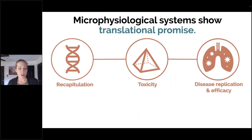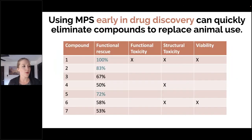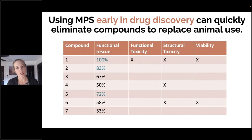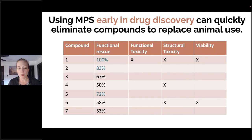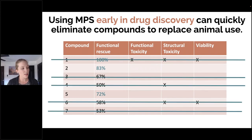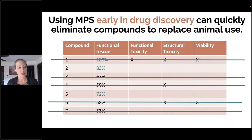MPS do really show translational promise. One way they're already being used — and where they're very promising — is early in drug discovery, allowing you to decide which compounds to actually take into animals, since animals are still required for FDA approval. In a theoretical example where you're looking at seven different compounds, you can apply them to your healthy MPS and diseased MPS, look at how much they rescue the diseased MPS and examine toxicity, then quickly eliminate toxic compounds and those that didn't rescue the disease phenotype. Rather than trying all seven in animals, you're just trying two.